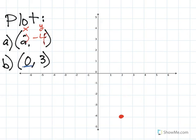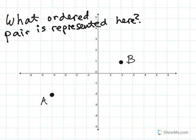For my second point, I have 0, which means I don't go right or left at all—it's a zero. I just go up 3 because of the positive 3, and there's my point.